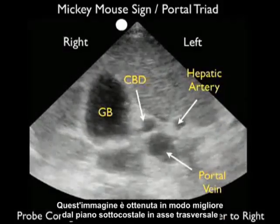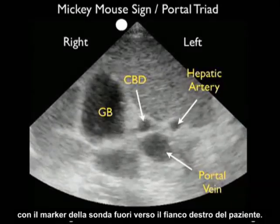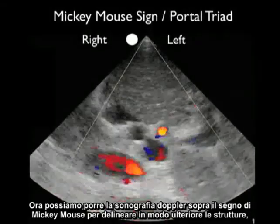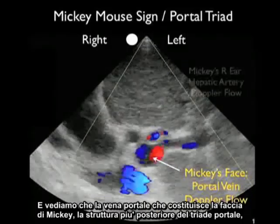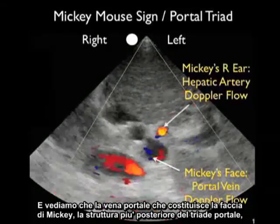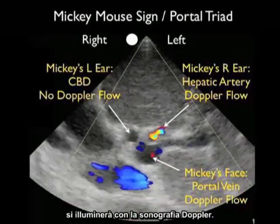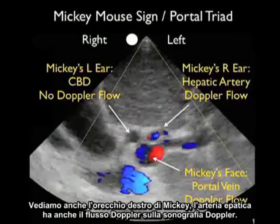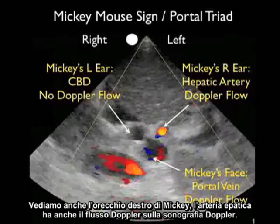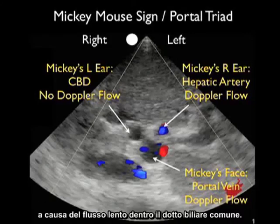This image is best obtained from a subcostal plane in a transverse axis with the probe marker towards the patient's right side. We can place Doppler sonography onto the Mickey Mouse sign to further delineate the structures. The portal vein — Mickey's face, the posterior-most structure of the portal triad — lights up with Doppler sonography. Mickey's right ear, the hepatic artery, also shows Doppler flow. However, the common bile duct — Mickey's left ear — fails to show any Doppler flow due to the sluggish flow within the common bile duct.